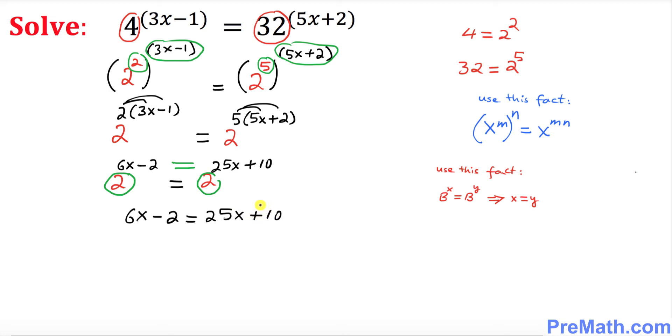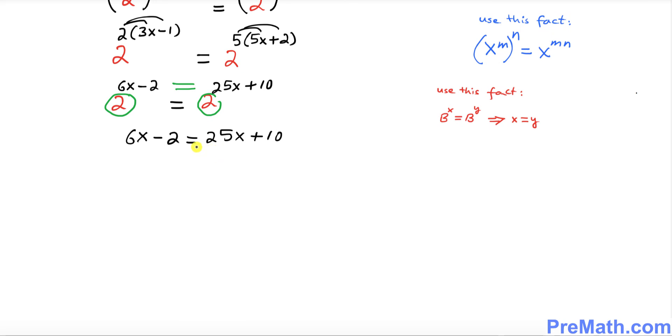Let's combine like terms and solve for x. I'll subtract 6x from both sides. This cancels out on the left, giving us negative 2 equals 19x plus 10.